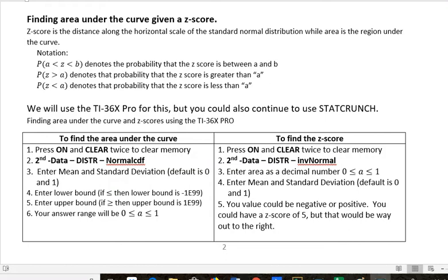Hi, it's Carly McElboy. Today I'm talking about finding the area under a curve given a z-score, or find a z-score given the area under the curve. A z-score is a distance along the horizontal axis of the normal distribution, while area is the region under the curve.